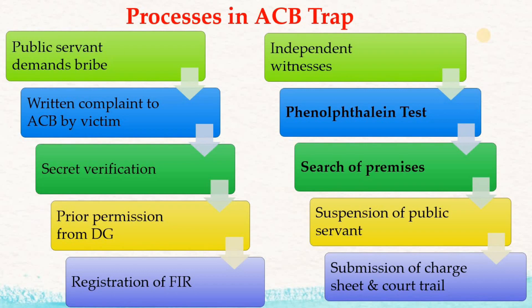Next, ACB plans the trap. In this video, we have the demonstration of a trap — the trapping of the bribe taker by ACB using the phenolphthalein test. After the phenolphthalein test, ACB searches the house of the public servant and his relatives. If the trap is successful, the concerned department has to immediately suspend the public servant. Next, ACB submits the charge sheet to the court and there is a court trial.